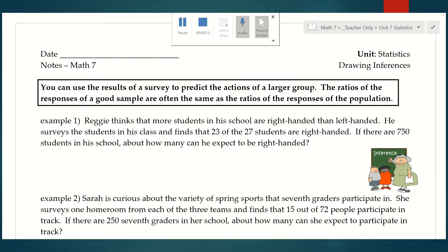This you are going to see is very similar to when we were doing probability and trying to predict something happening with an experiment. You can use the results of a survey to predict the actions of a larger group. The ratios of the responses of a good sample are often the same as the ratios of the responses of the population.